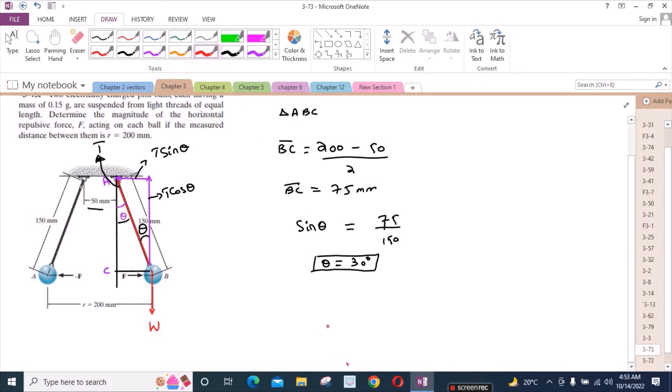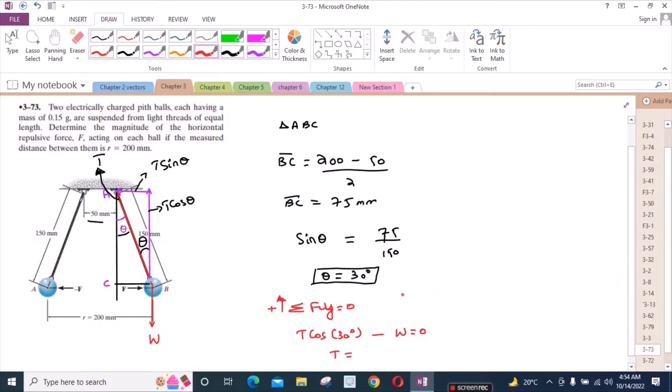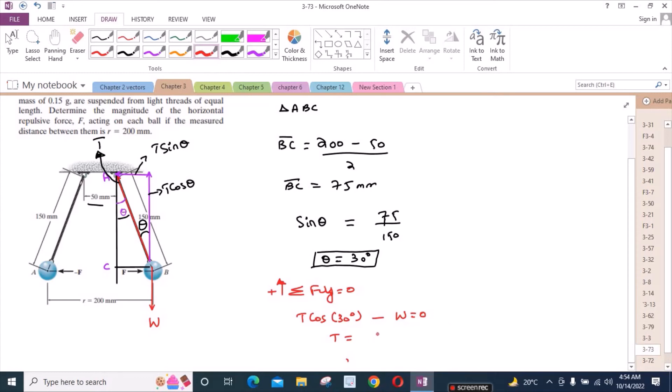If I apply the equations of equilibrium, then I have sum of the forces in y direction equals to zero. I am considering the upward direction as positive. So I have T cos theta, which is 30 degrees, minus W equals to zero. So T is equal to W, which is mass times acceleration due to gravity. So mass is 0.15 grams, which means 0.15 times 10 to the negative 3, times 9.81, divided by cos 30 degrees.